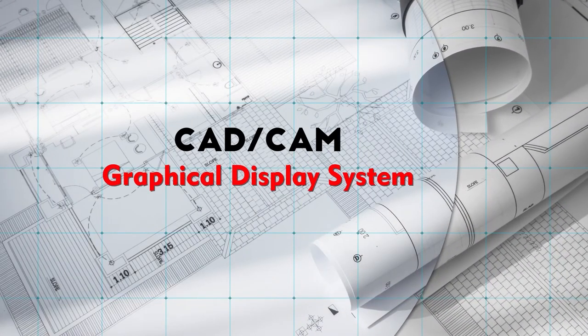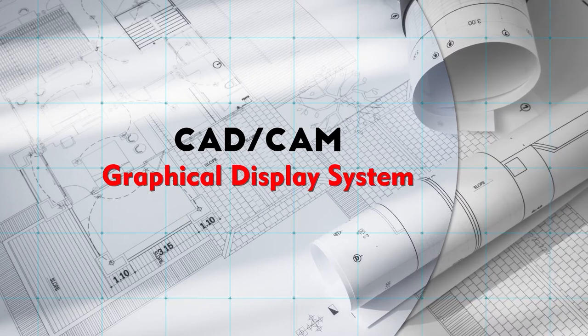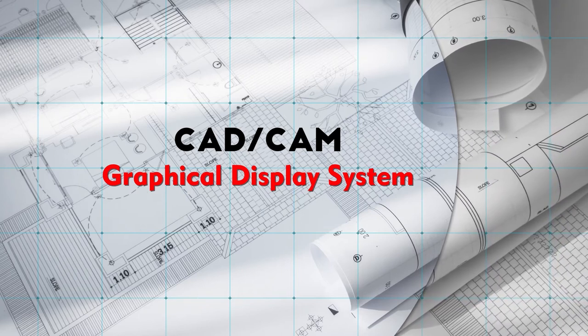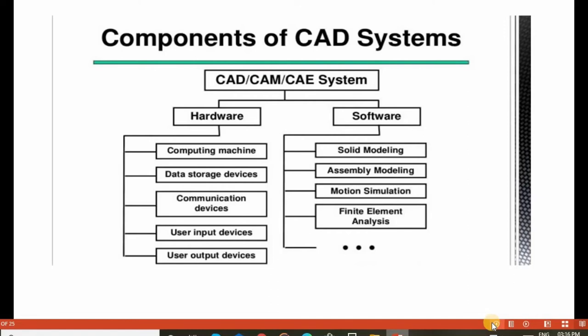The Graphic Display System plays an important role in computer aided design. In computer aided design systems, there are two major components: hardware and software. Hardware includes computing machine, data storage devices, communication devices, user input devices, and user output devices. In software, it includes solid modeling, assembly modeling, motion simulation and animation, finite element analysis, and so on.